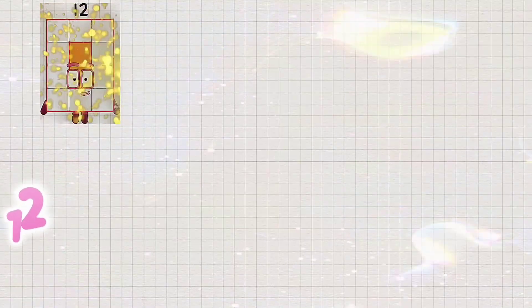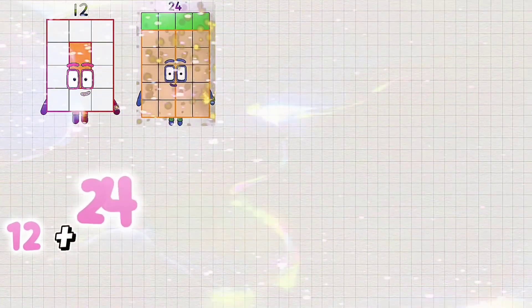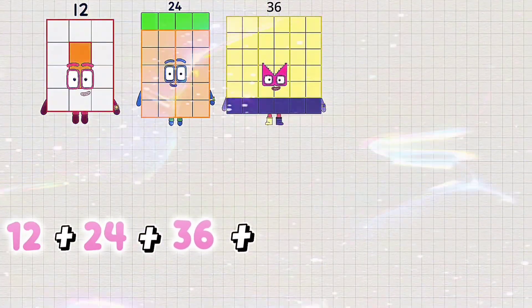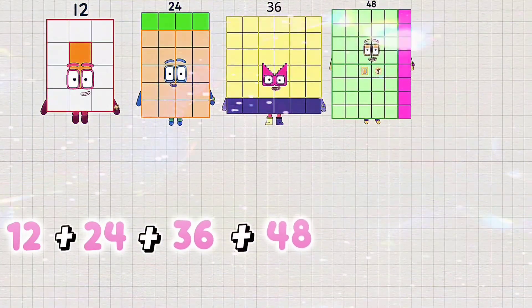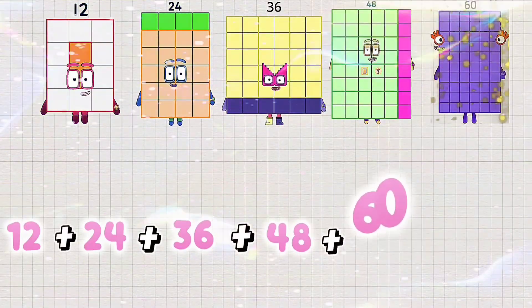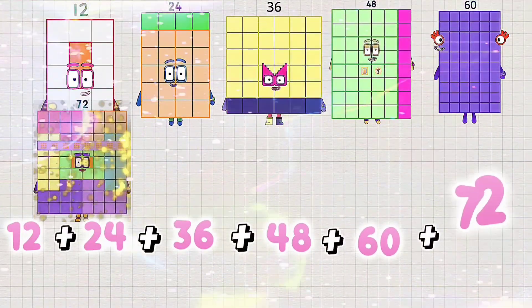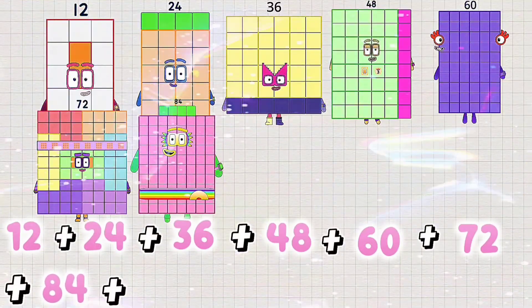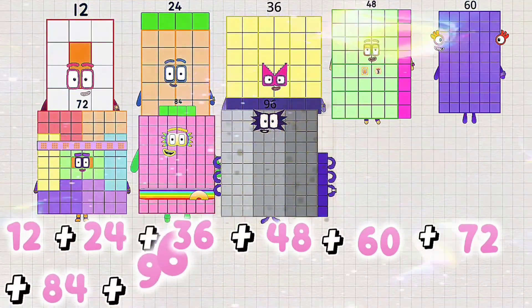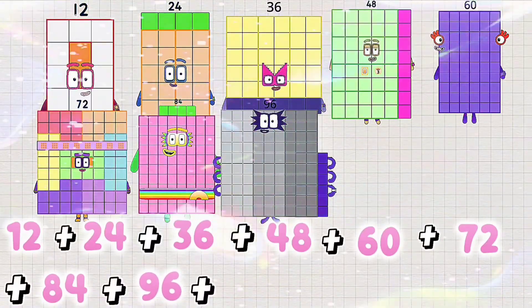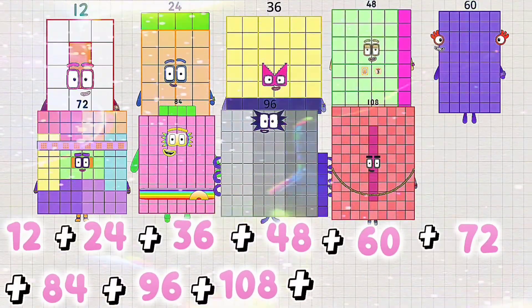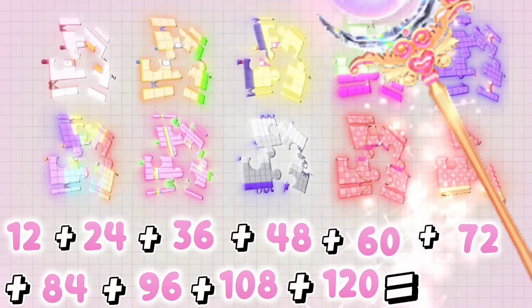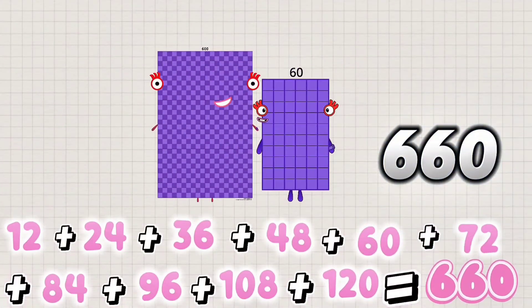12 plus 24 plus 36 plus 48 plus 60 plus 72 plus 84 plus 96 plus 108 plus 120 is equals to 660.